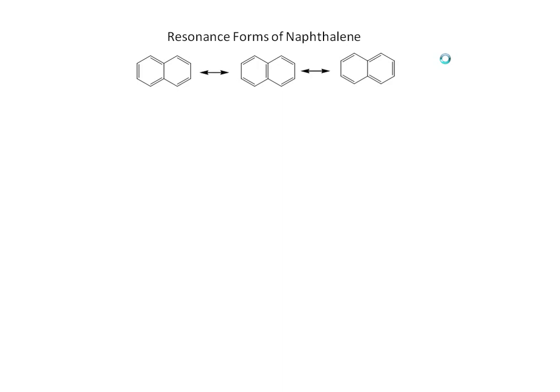We will start with the resonance forms of naphthalene. There are three resonance forms of naphthalene. There are five double bonds present in naphthalene. In the first form, three double bonds are in one ring, then alternate double bonds are available. The same double bonds shift to alternate positions across the rings to give three resonance forms.